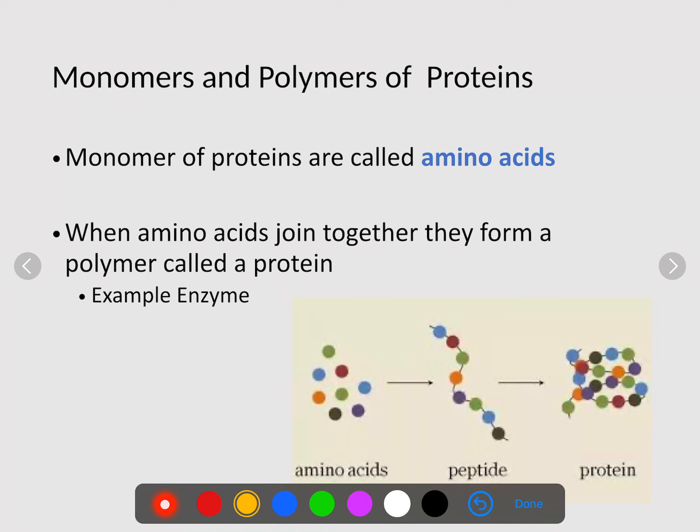Monomers of proteins are called amino acids. Amino acids are the monomer or single unit that we have to make our proteins. Here are all of our amino acids, and eventually through chemical reactions, they link together and fold upon themselves to create our protein. Our monomer is amino acids, whereas our polymer, these amino acids joined together, are our proteins.